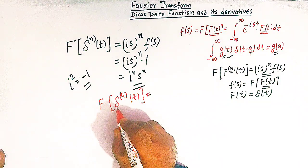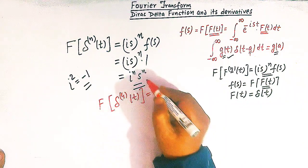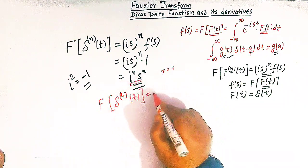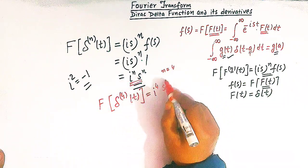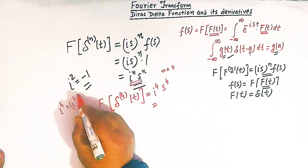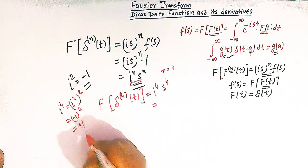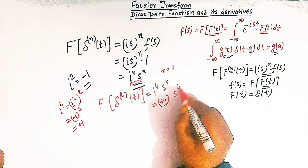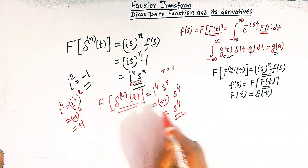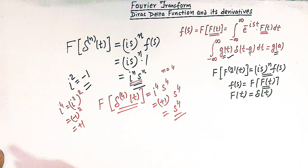For example, to find the Fourier transform of the fourth derivative of delta of t, we substitute n equal to 4: i raised to 4 times s raised to 4. Now i raised to 4 equals i squared whole squared equals minus 1 squared equals positive 1. So the Fourier transform of the fourth derivative of delta of t is s raised to 4, where the parameter s may be real or complex.